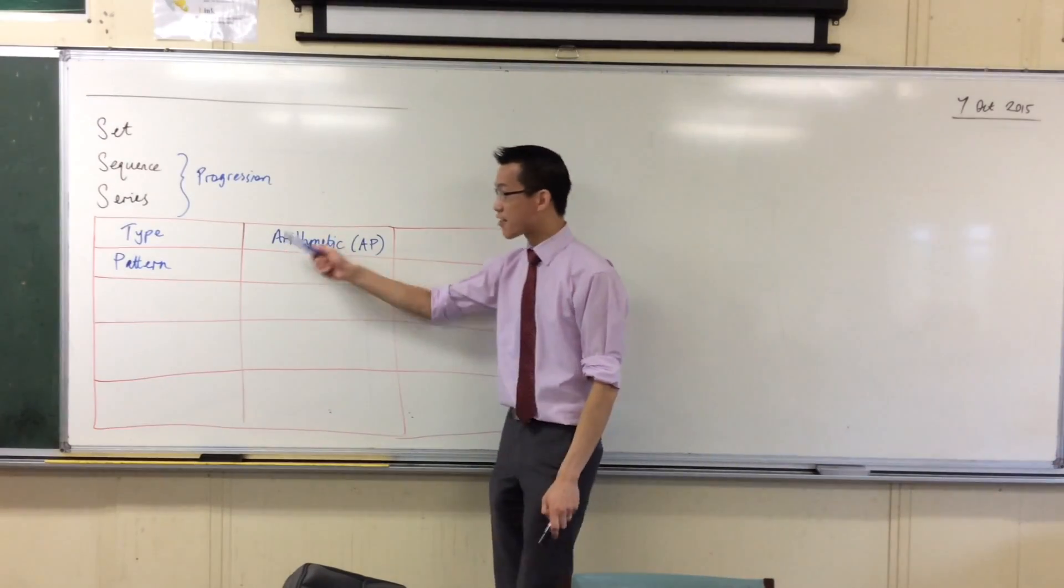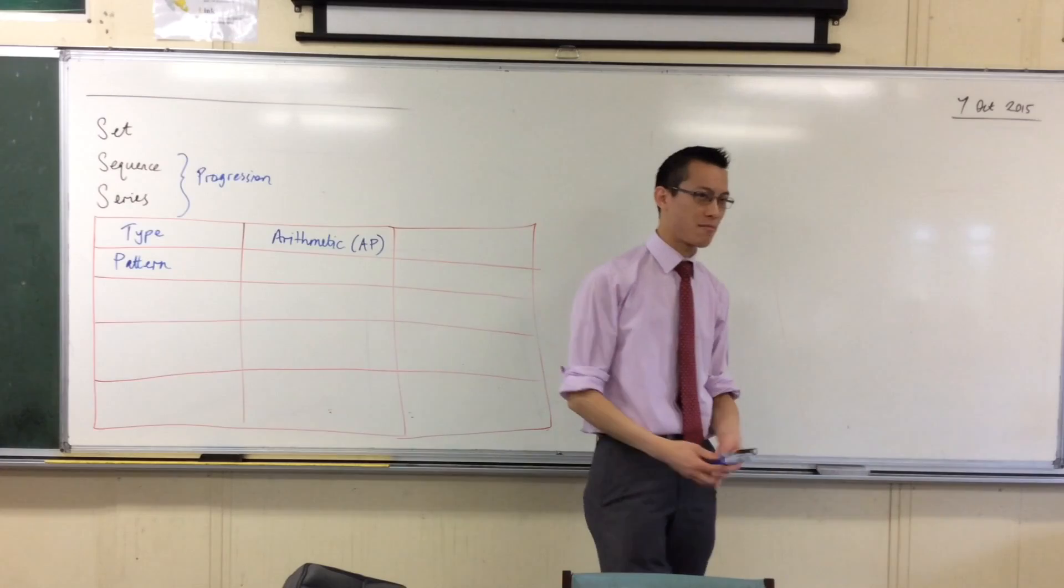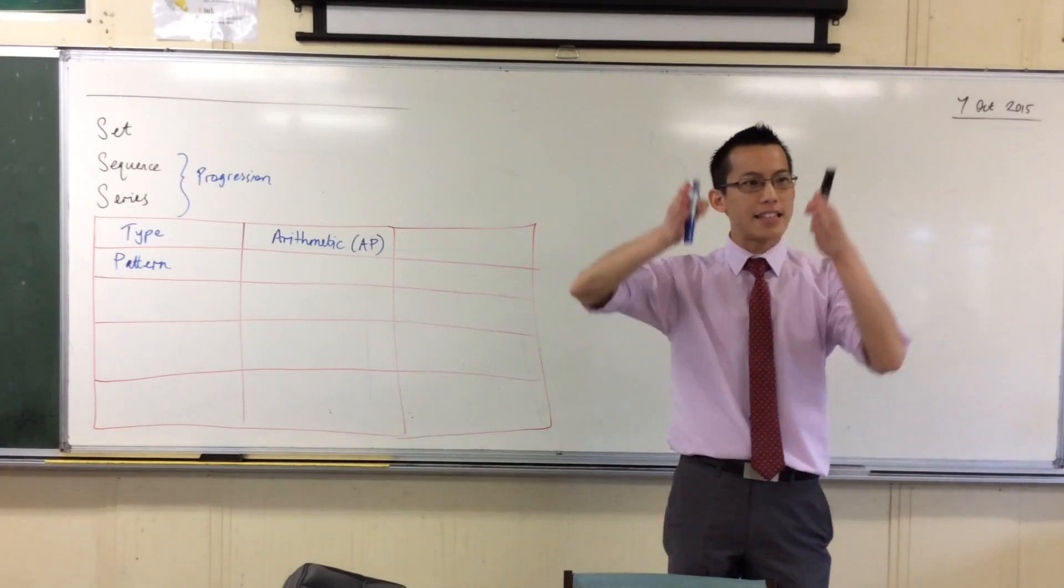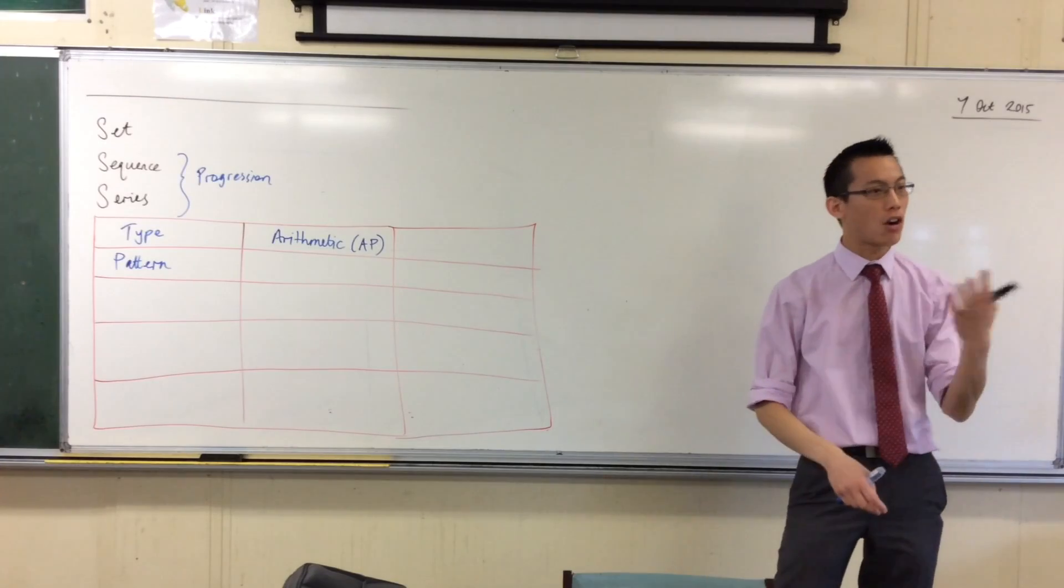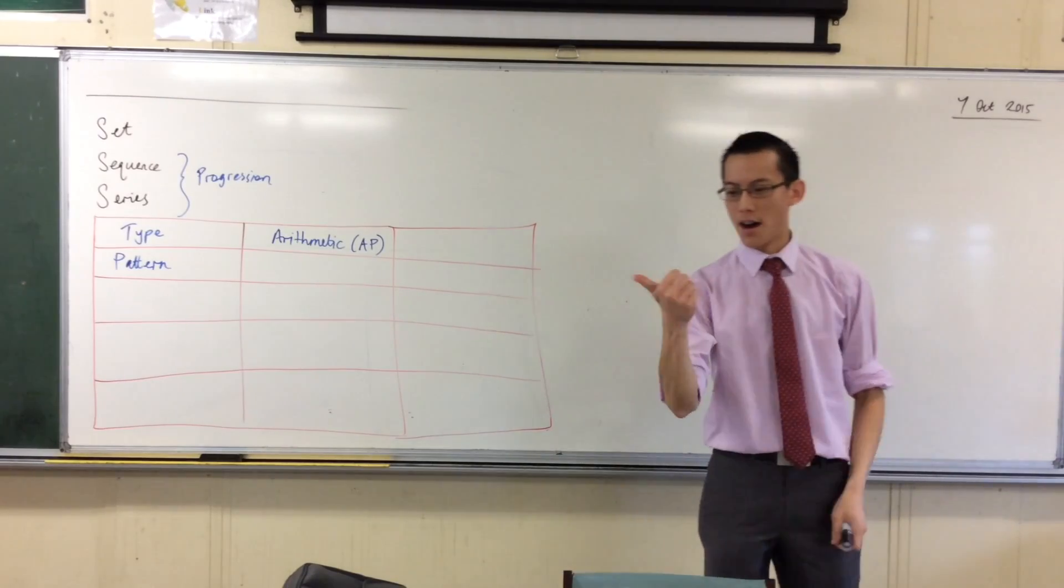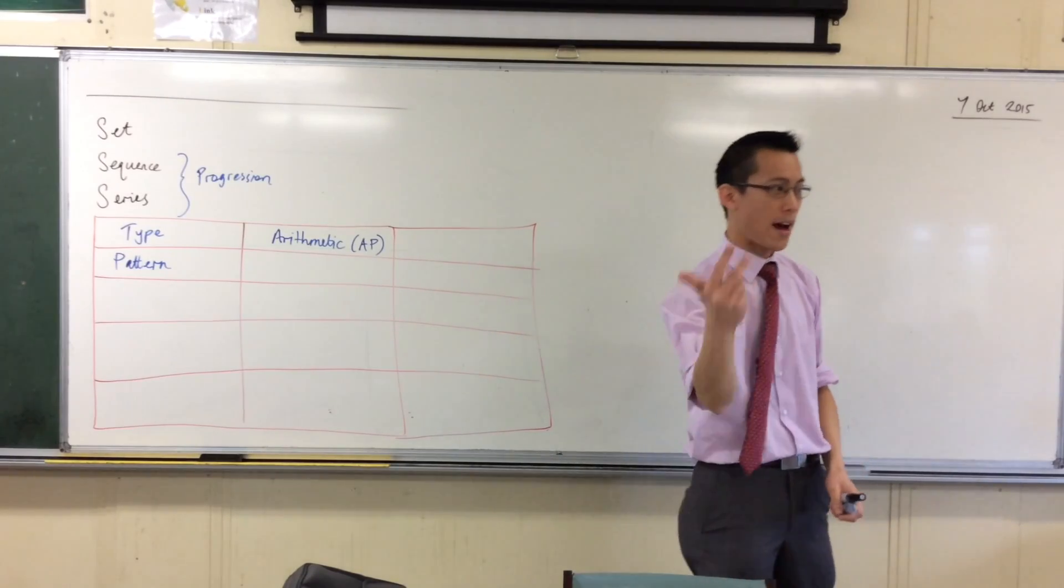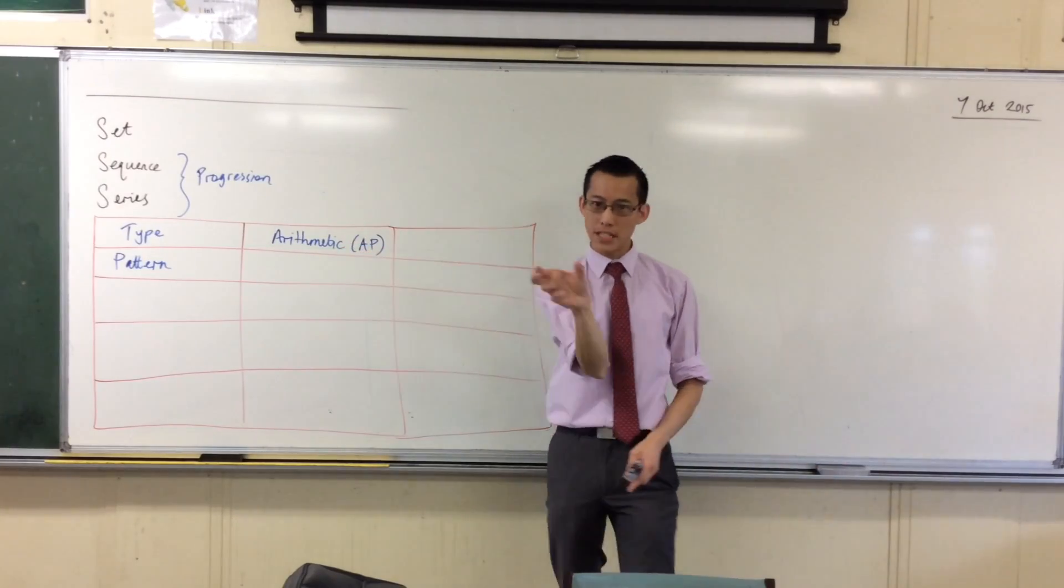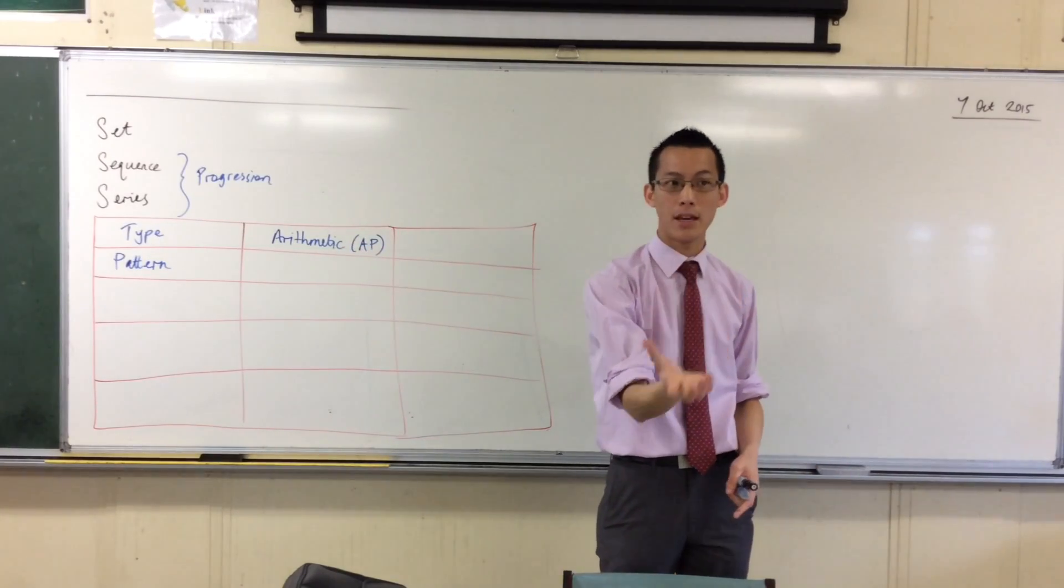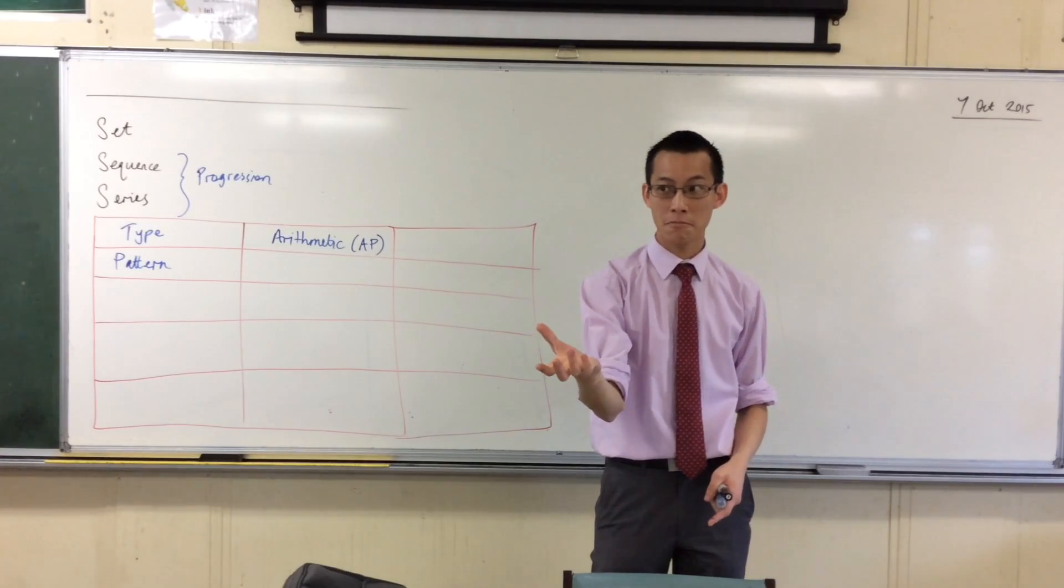So for instance, the odd numbers, 1, 3, 5, 7, 9, they're an AP, right? Because there's a common difference between every term, namely, between the odd numbers, namely two.